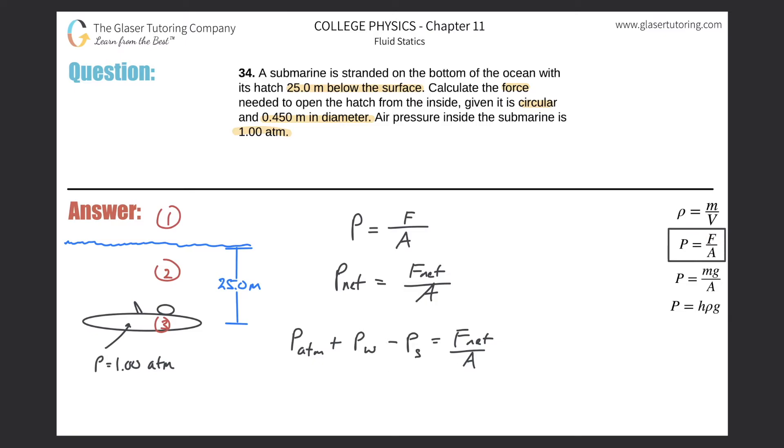So to find the net force, all I need to do is multiply the area over. So we're going to have the net force here is equal to area. Now let's get rid of A and substitute in the formula for area - that's going to be pi r squared because it's circular. Then that's going to be multiplied by the pressure of the atmosphere, which is just one atmosphere worth of pressure, plus the pressure of the water. Now how do we find the pressure of the water? We're gonna have to use this equation. So this is the height of the water multiplied by the density of the water - remember it's seawater - multiplied by gravity, and then subtract out the pressure inside the submarine.